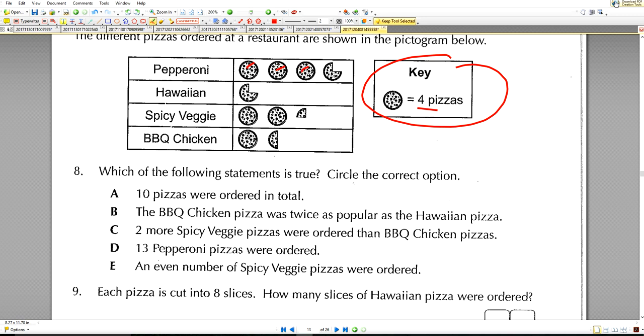4, 8, add the 1, 9, 4 add 2 is 6. So we've got some totals now for each of those. Which of the following statements is true? 10 pizzas were ordered in total—that is obviously wrong because we already had 15 here, 3 here, 9 here, and 6. That doesn't make 10. The barbecue chicken pizza was twice as popular as the Hawaiian pizza—6, yes it is, because 6 is double of 3. Correct, B is the answer.